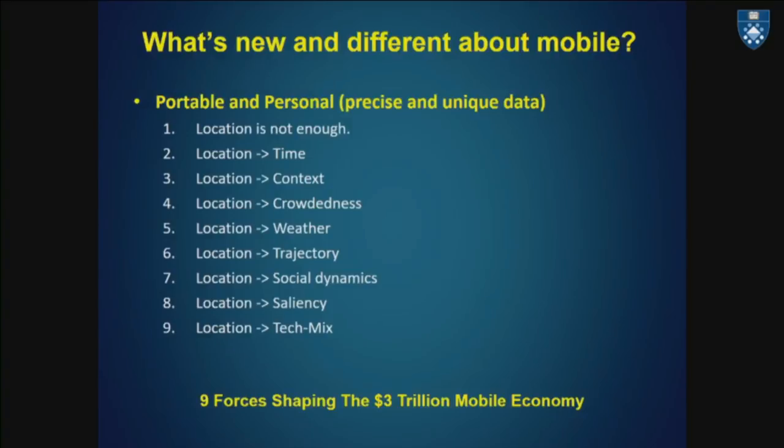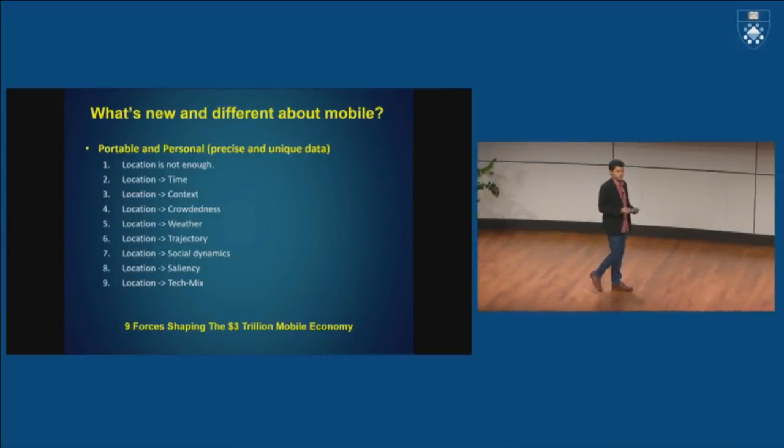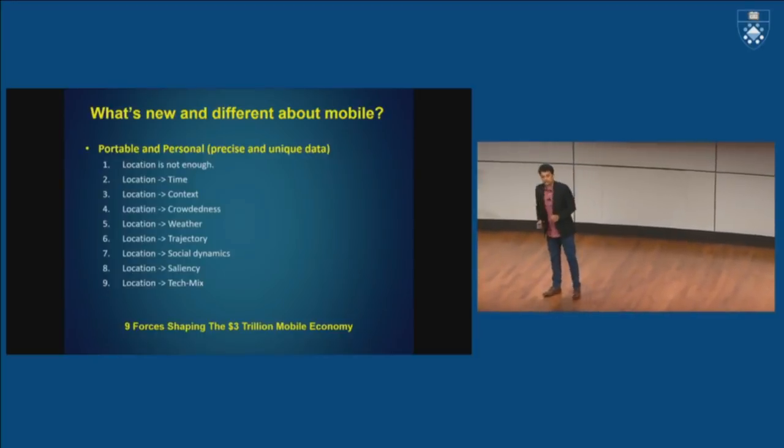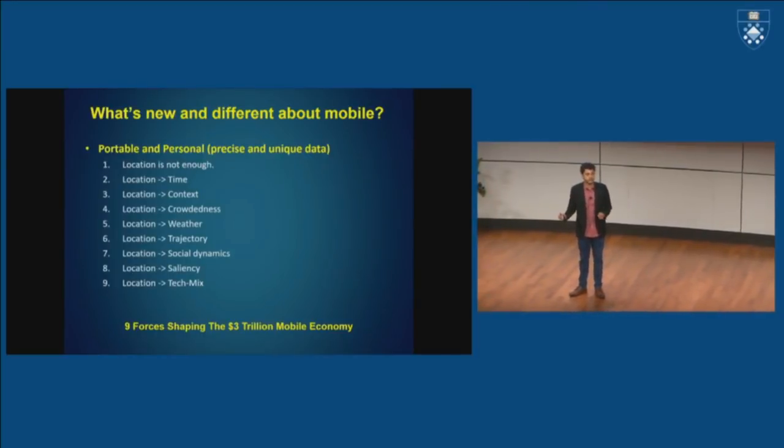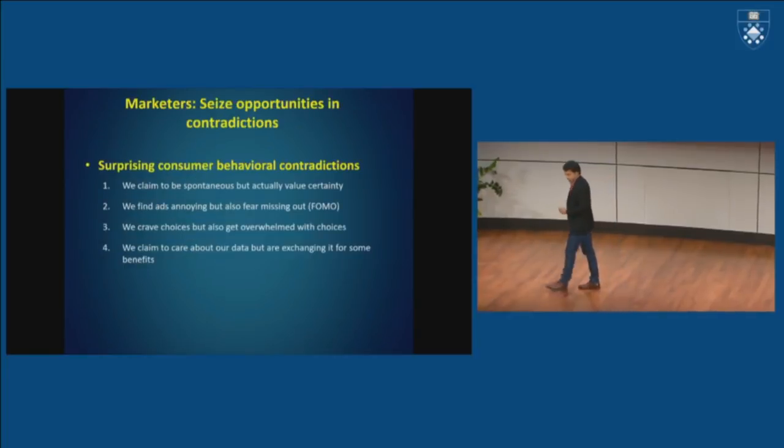So there are these nine forces that I talk about in my book. I won't get a chance to go through all of them, but I'll give you examples of two or three to give you a sense for how these nine forces are shaping this economy. This economy today is worth $3 trillion, but yet it's only 4% of the world's GDP. So 4% of the world's GDP is all that's touched by mobile today. That translates into $3 trillion. It's only going to grow exponentially from here.